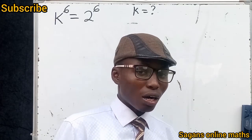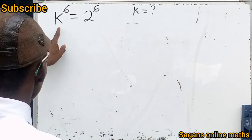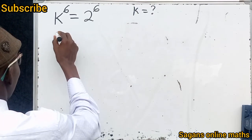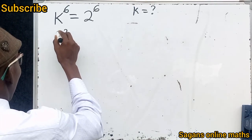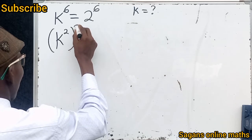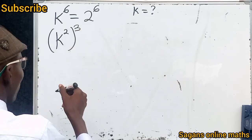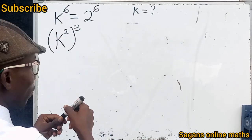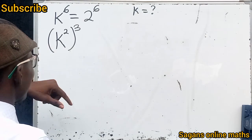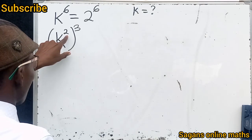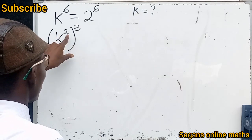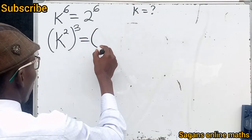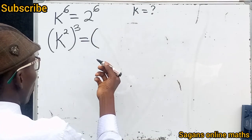Now look at what we are going to do. I'm not wrong if I decide to write k raised to the power of 4/6 as k squared, raised to the power of 3, because 2 multiplied by 3 gives us 6. By one of the properties of indices, the index inside the parentheses can multiply the index outside.